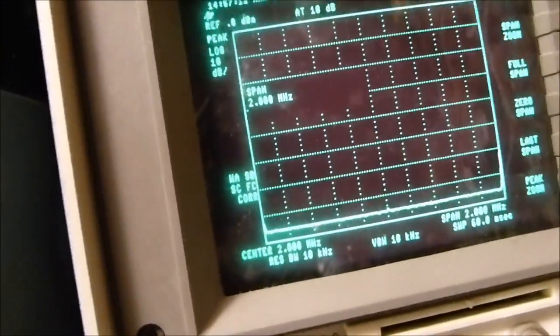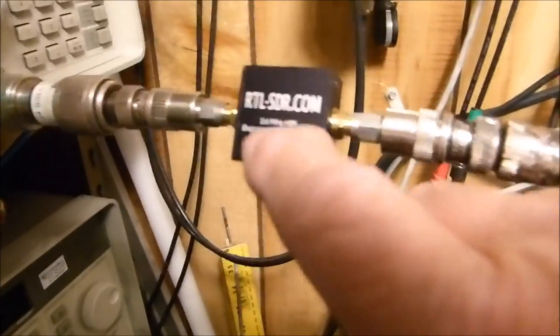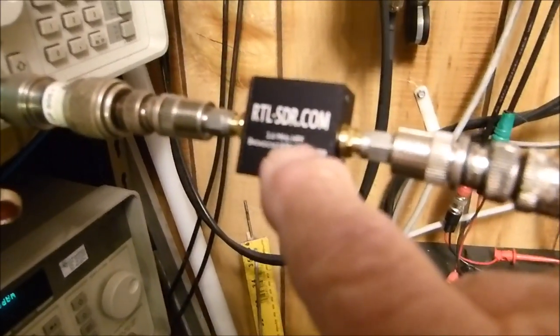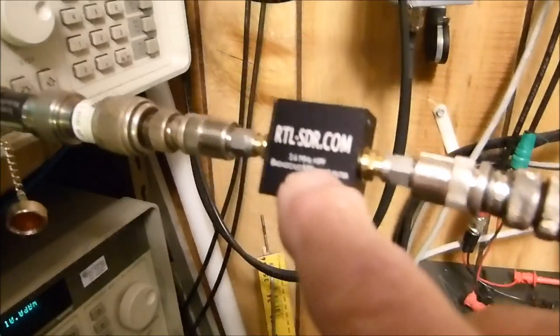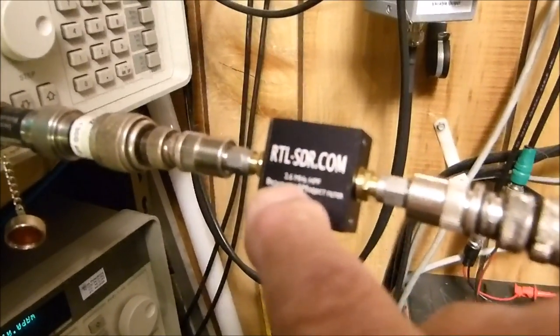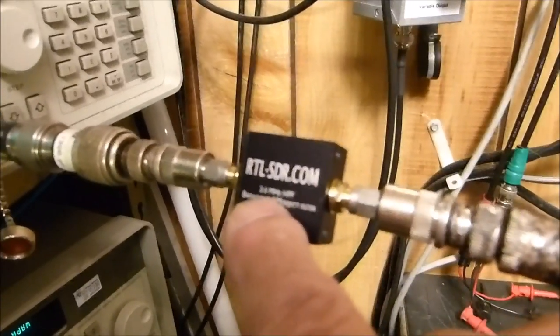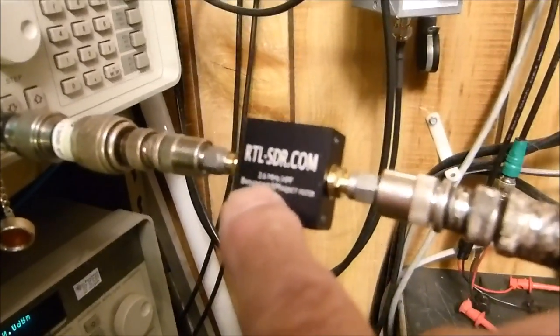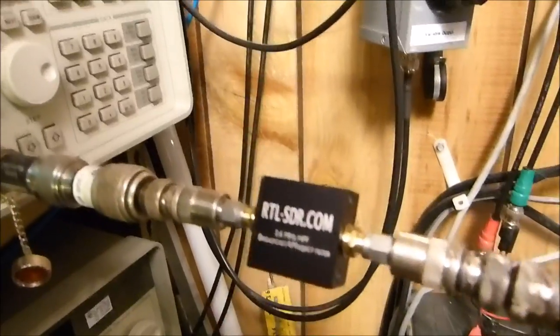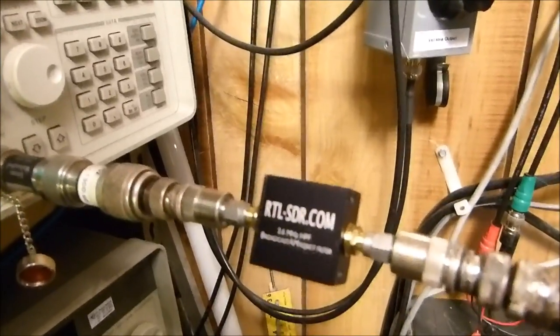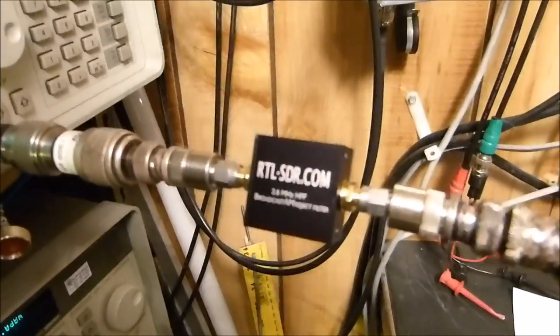So this high-pass filter, what it does is it's going to block everything. It starts attenuating at 2.6 megahertz, and the lower you go in frequency, the more it attenuates all the way down to DC. So you got to realize what it's doing for you in case you buy one and try to use it.